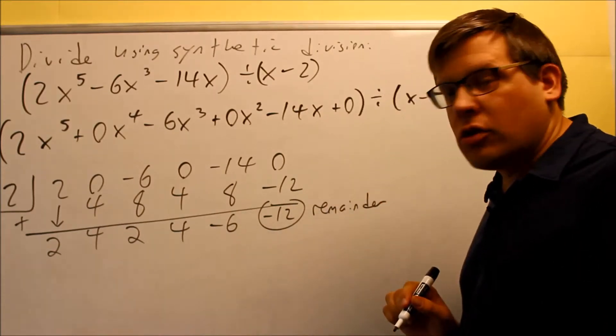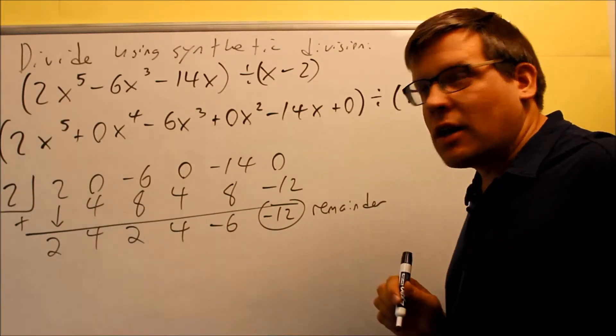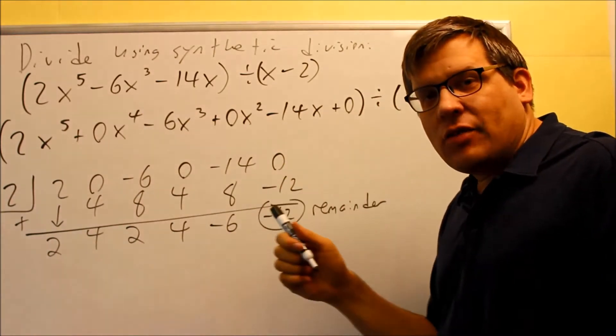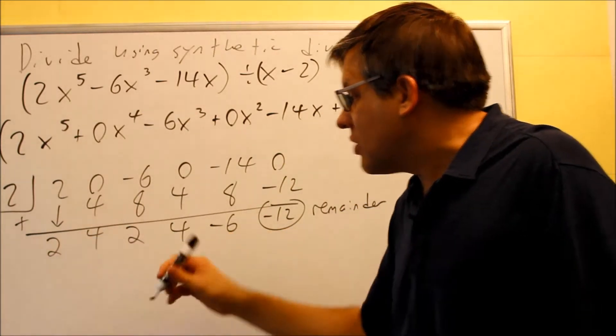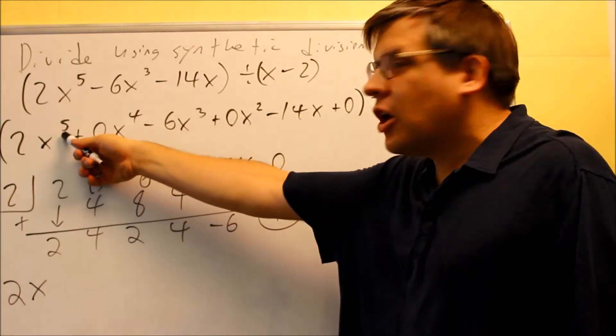And then for the quotient, we need to take this and turn it into a polynomial by putting the x's back in. The highest power was originally a 5. So when I rewrite this, it's going to be 2x, and I have to drop this power down by 1. It was a 5th power.